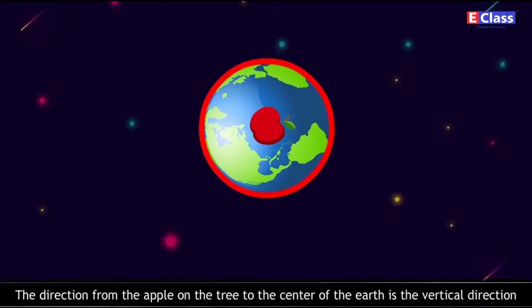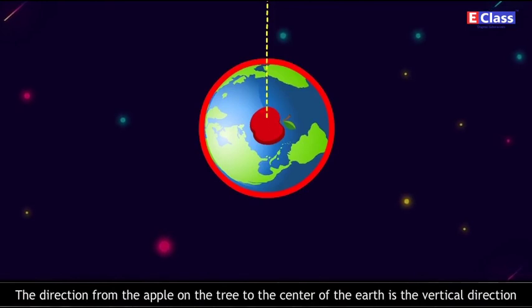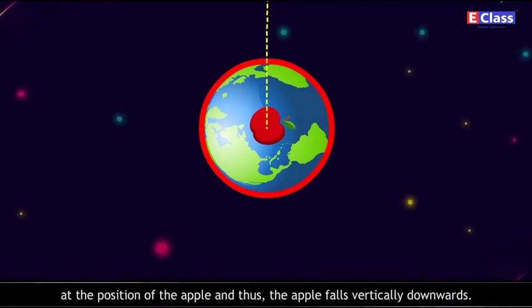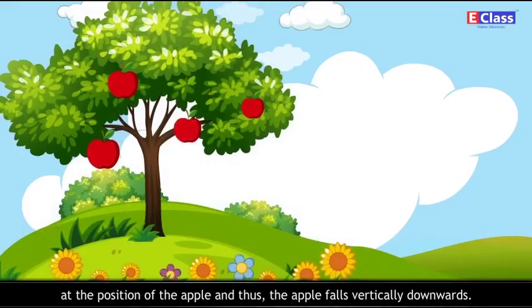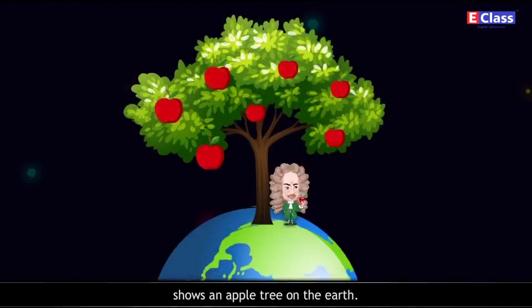The direction from the apple on the tree to the center of the earth is the vertical direction at the position of the apple and thus the apple falls vertically downwards. This shows an apple tree on the earth.